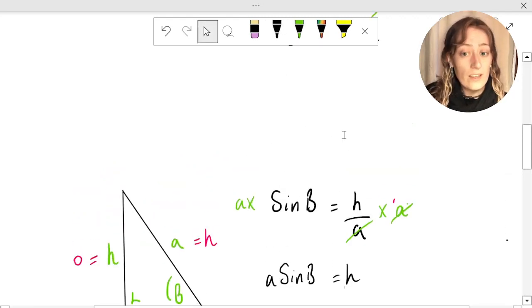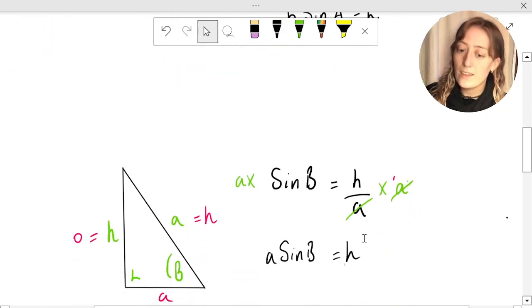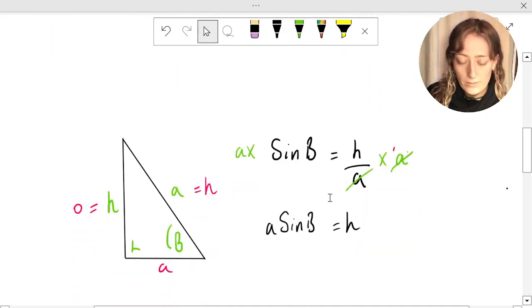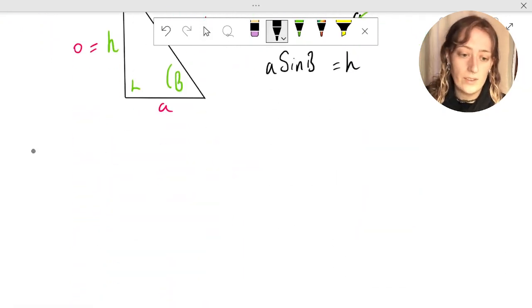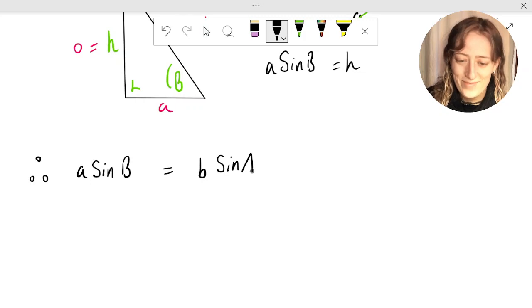Now, we've got two things equaling this h. We've got b sine a is h, and we've got a sine b is h. So we can let b sine a equal a sine b. Therefore, a sine b equals b sine a.